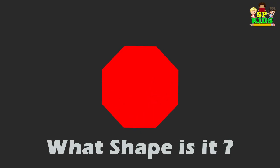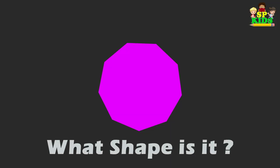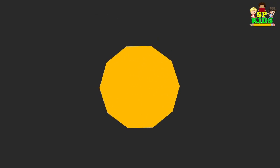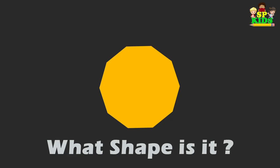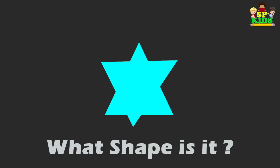What shape is it? Octagon. What shape is it? Nonagon. What shape is it? Decagon. What shape is it? Star.